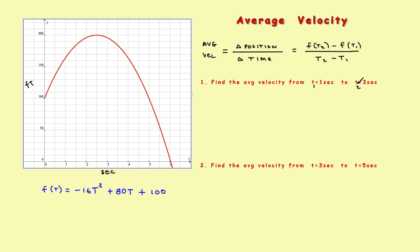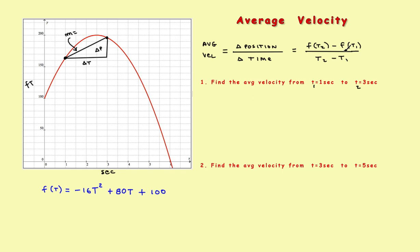I suggest you draw these points on a graph. Go to 1 second, go up on the graph — the object's position at 1 second is right there. Go to 3 seconds — the object's position at 3 seconds is right here. The average velocity is nothing more than the slope of the line between those two points. Draw a line from this point to this point. The horizontal distance is the change in time, the vertical distance is the change in position. So it's change in position over change in time.